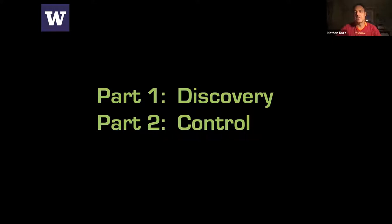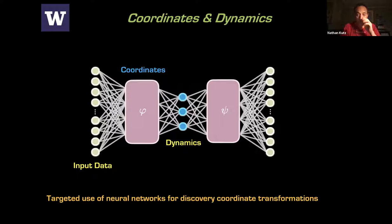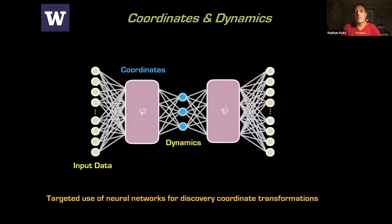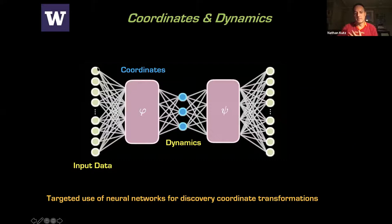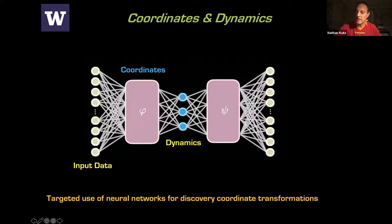Part one today will talk about what we can do with data in terms of the discovery of physics and engineering principles — how can we use data to inform that? Tomorrow, we'll think about how to take that into the realm of controlling complex systems. Everything is going to focus on targeted uses of neural networks. I'll think about two key concepts: learning a coordinate system, and then representing the dynamics in that coordinate system. Neural nets provide an exceptional way to learn representations in a latent space for the dynamics we want to model.